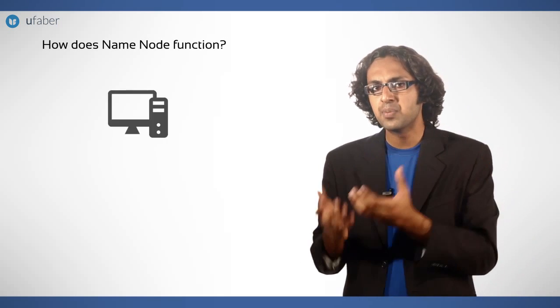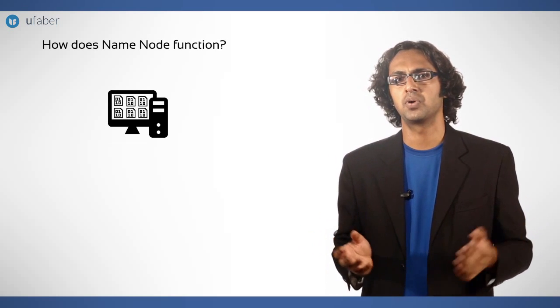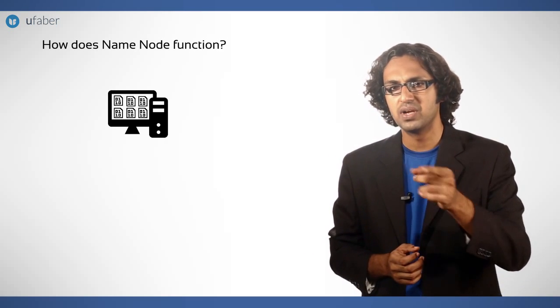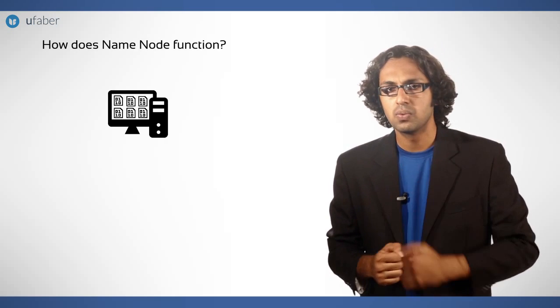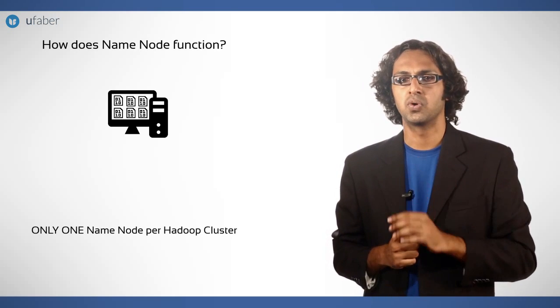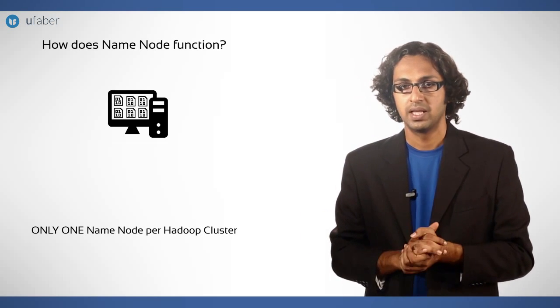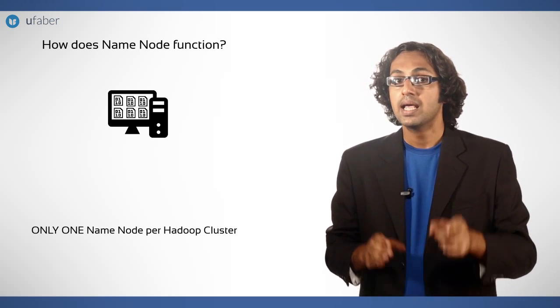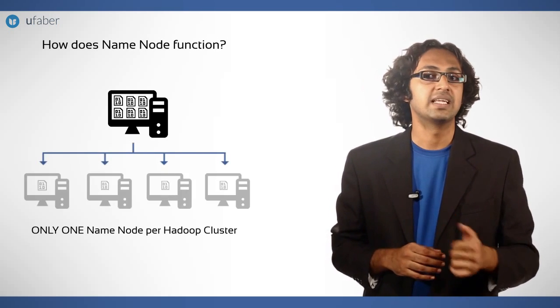We know that name node has complete information about every piece of data available in the cluster. There is always only one name node per Hadoop cluster. Its main duty is to get the data stored in the cluster with the help of data nodes.